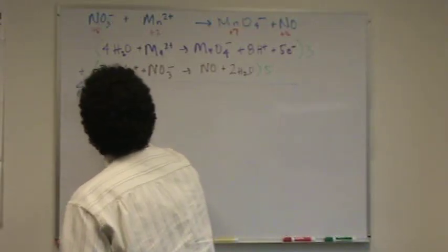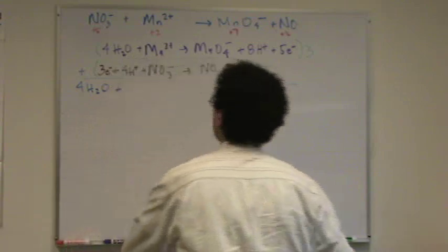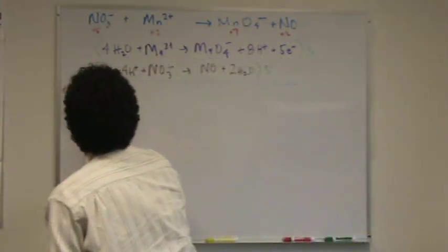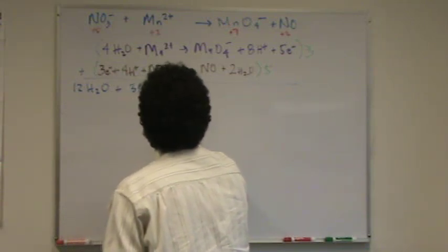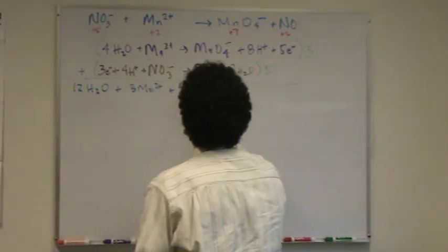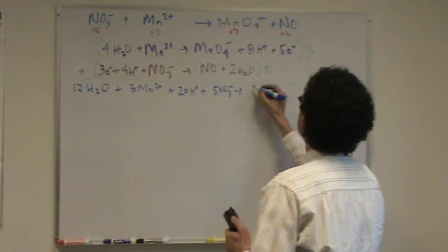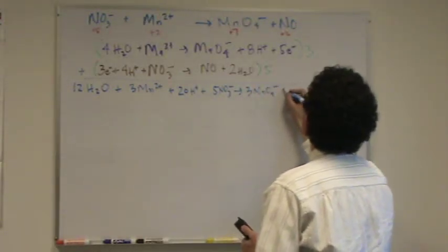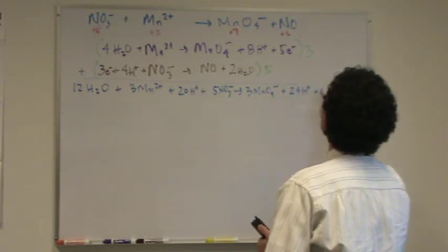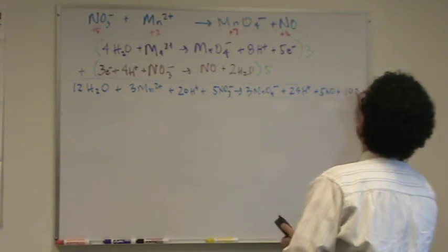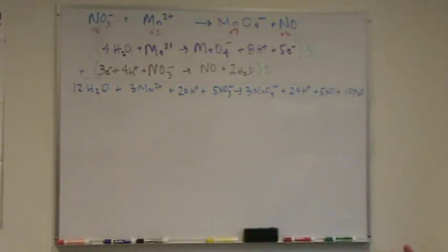So, add it up. We have four H2O. Oh! I've got to multiply it by three. It's twelve H2O. Plus three Mn2+ plus twenty H plus plus five NO3, or nitrates, going to three permanganates plus twenty-four H plus plus five NO plus ten waters. Okay. Hopefully I didn't make a math error. I think it looks okay. I don't see any problems.